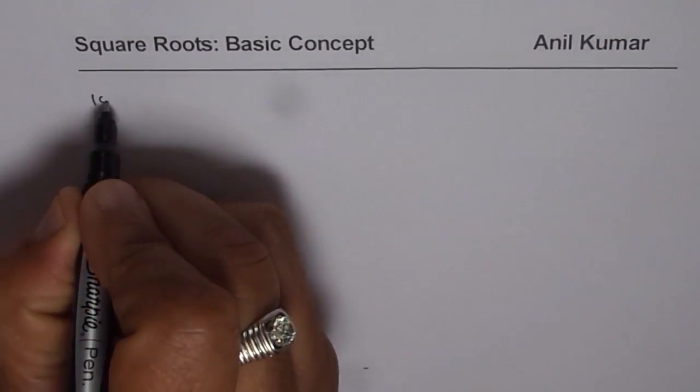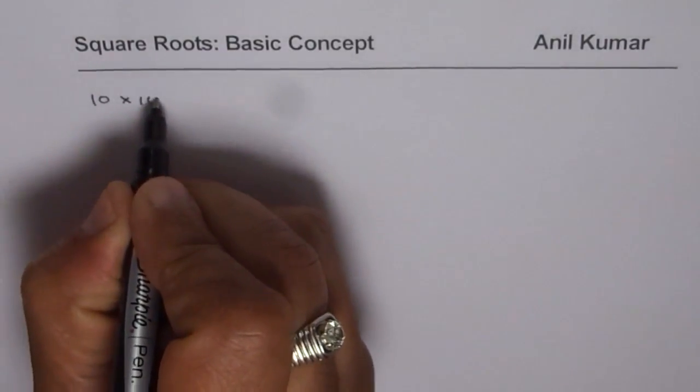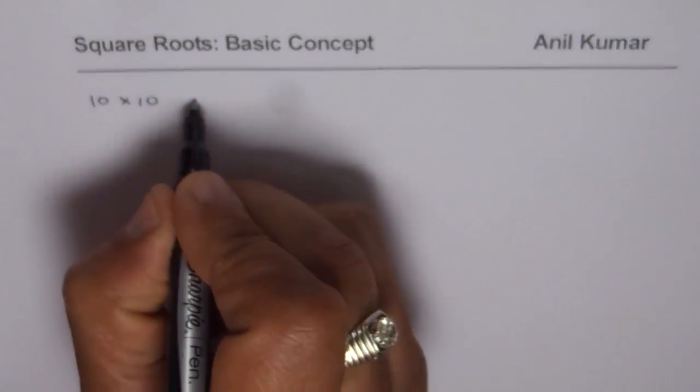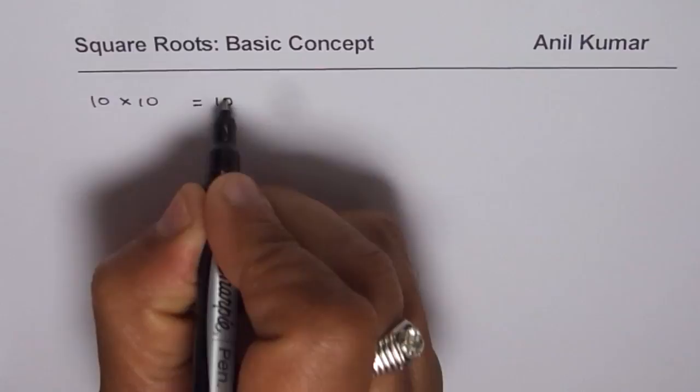Let us say we are multiplying two numbers, 10 and 10. Number with itself, 10 times 10, what do we get? We get 100.